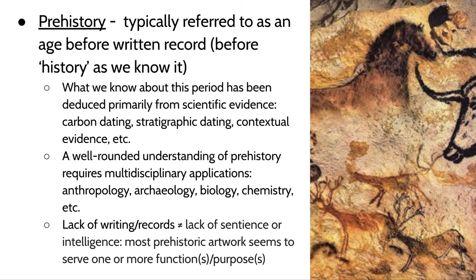Prehistory is a term you've probably heard and used before, but a lot of people don't really know what it means. Prehistory refers to a time before history as we know it — an age before the written record, before humans had a written language. Because we don't have human records of this period, we don't know that much about it. A lot has been shrouded in mystery for thousands of years. What we do know has been deduced primarily from scientific evidence — things like carbon dating, stratigraphic dating, and contextual evidence.